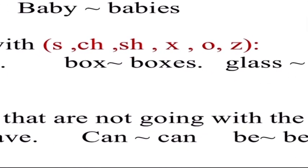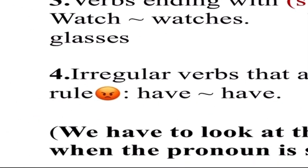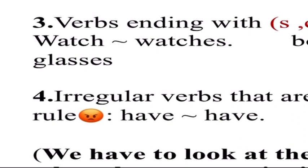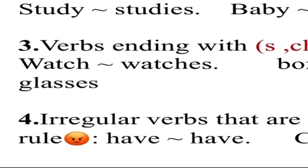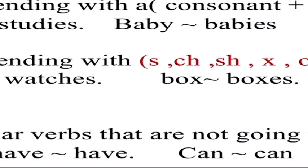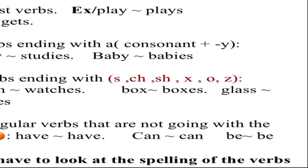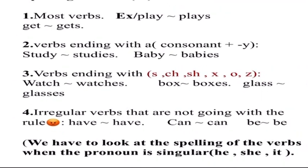Rule three: verbs ending with s, ch, sh, x, o, z — when we have these sounds at the end of the word we add 'es'. For example: watch/watches, box/boxes, glass/glasses — we add 'es' because of these sounds. Rule four: irregular verbs — verbs like 'have', 'can', 'be' — we don't add 's'. Note: we look at spelling rules only when the pronoun is singular he, she, it.